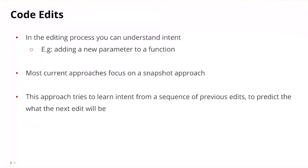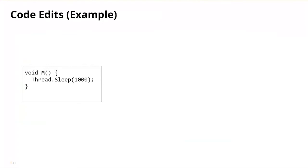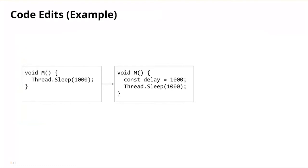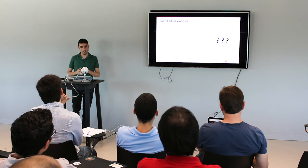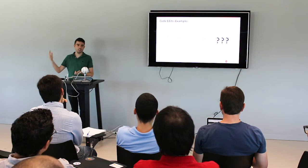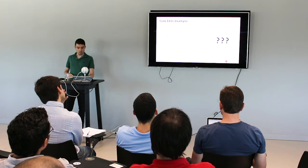Another talk — not yet published — was about predicting the next code edit. Given a sequence of previous edits, the model tries to predict the intent and what the next edit will be. For example, after one edit to a function, the model predicts that the next edit would replace a hardcoded value like 1000 in a sleep call with a delay variable. These are quick, targeted edits rather than large rewrites.